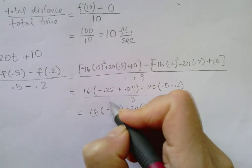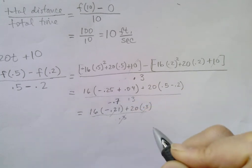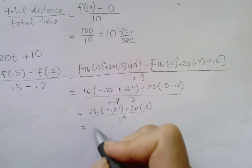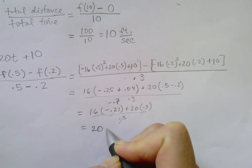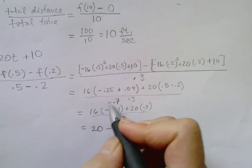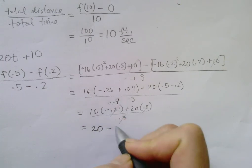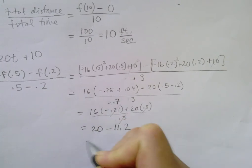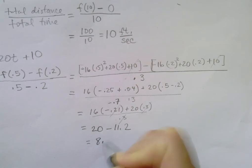You get negative 0.7. Finally, and I'm going to just reverse order, it's 20 minus, if you multiply 16 times negative 0.7 you get 11.2, equals 8.8.